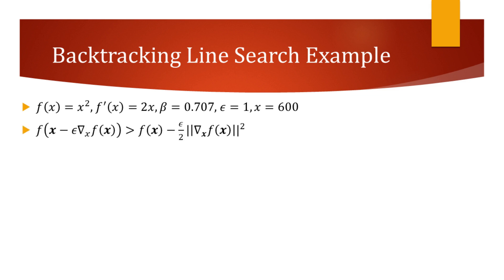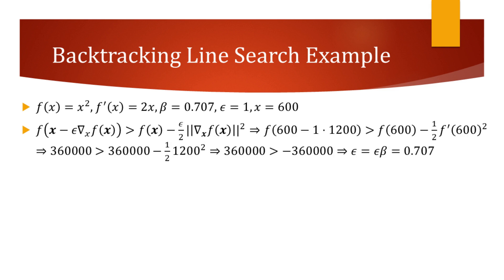Now we need to evaluate whether the inequality in the algorithm is true, and if it is, update the learning rate. Substituting the respective values into the inequality, we find that it holds true. Hence, we update the learning rate by multiplying it with beta.